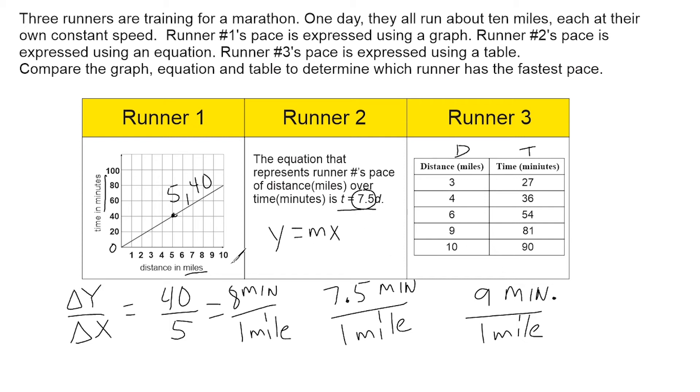So if we compare these three paces here, the runner with the fastest pace is this runner right here. And that is because to run the same distance, in this case one mile for all three runners, it takes this runner the least amount of time. So they would be able to complete their mile more quickly than the other two. So we would say that runner 2 has the fastest pace.